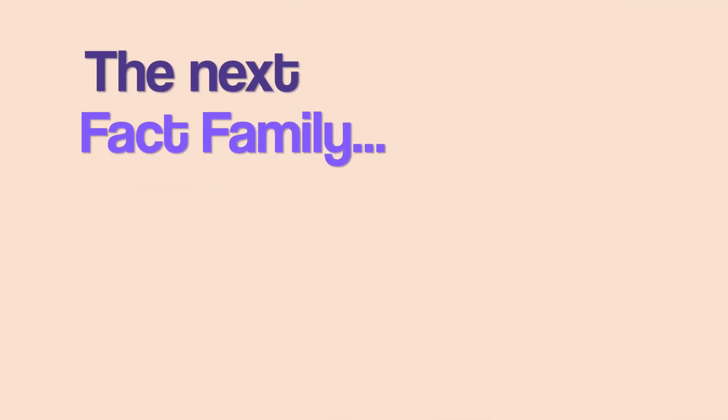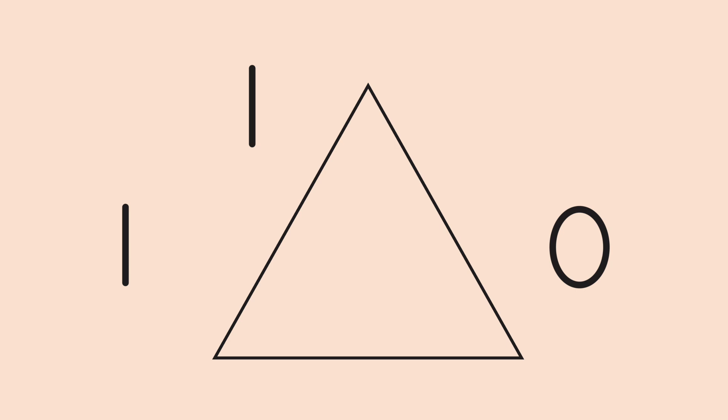The next family was one, one, and zero. He plugged in the numbers like this. The largest number will go to the top. Since there are two ones, one of them goes to the top. The other two numbers went to the bottom. And then he tried working with the numbers to make addition and subtraction facts.